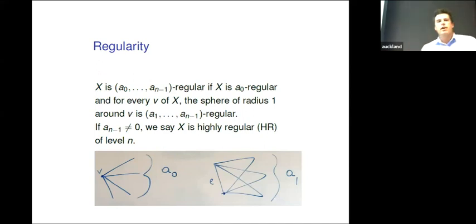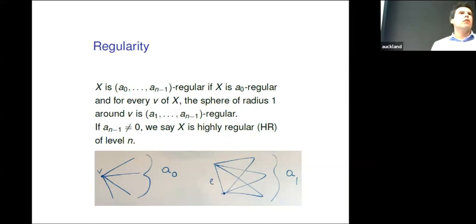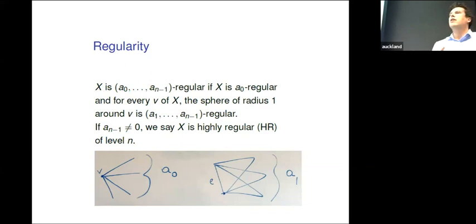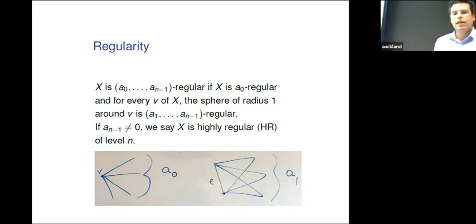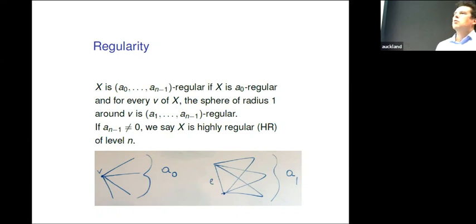We will want these graphs to be highly regular. Every vertex has the same number of neighbors — that's the usual regular graph. Now we want higher regularity properties. In addition to every vertex having the same number of neighbors, I can consider an edge and look at how many triangles contain that edge. If I require this also to be a constant, then I have a level-1 regularity. I can go on: consider a triangle and ask in how many four-cliques it is contained, et cetera. If I can do that from level 0 up to n minus 1 and the last one is not 0, then we say it's highly regular of level n.